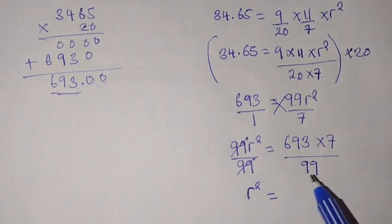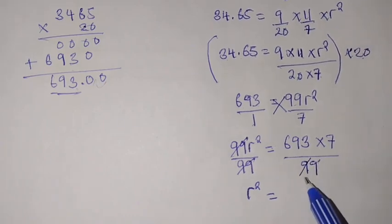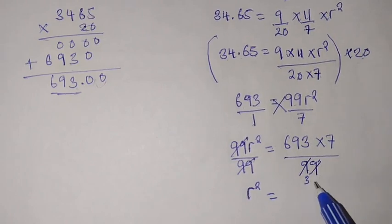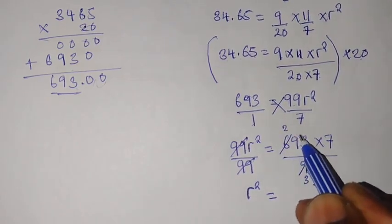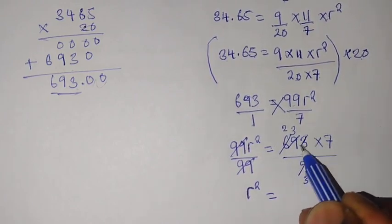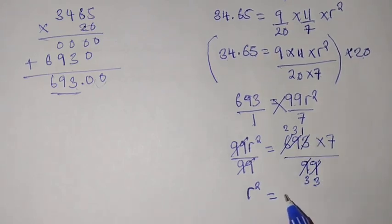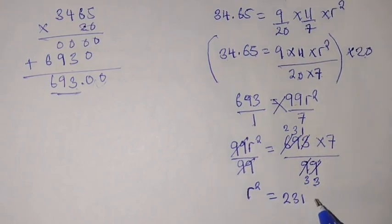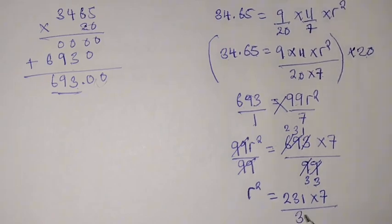From here, what we can do is divide this. We say 3 into 99 is 33, then 3 into 693. 3 into 6 is 2, 3 into 9 is 3, 3 into 3 is 1. So we are remaining with 231 times 7 over 33.